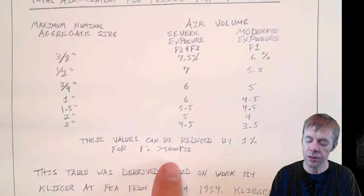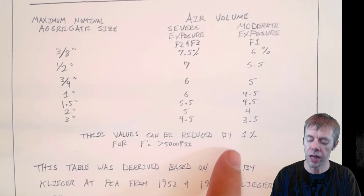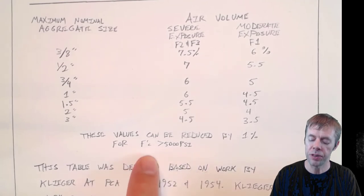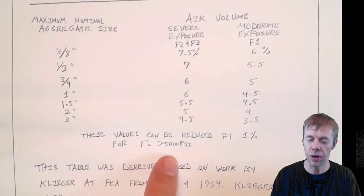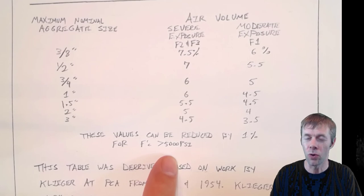Now ACI does let you reduce the air content needed by one percent if your F prime C is greater than 5,000 PSI. The thought is that if your water cement ratio is low enough, you should be able to reduce the amount of air content you need. A lot of people ignore this though.